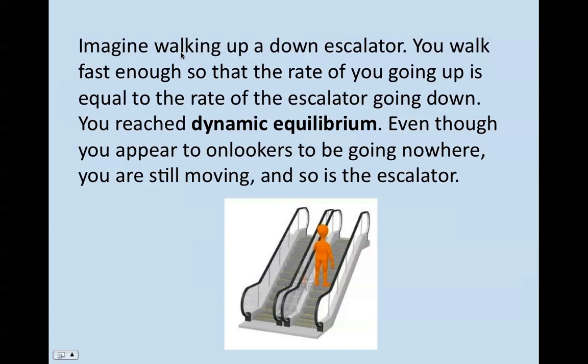You need to imagine walking up an escalator that's moving down. If you're able to walk fast enough, so the rate of you going up is the same or equal to the rate of the escalator going down, you've reached something called dynamic equilibrium. Someone standing far away is actually going to appear to them that you're just standing in place because you're walking up as fast as the escalator is going down.